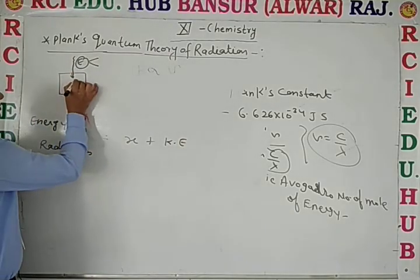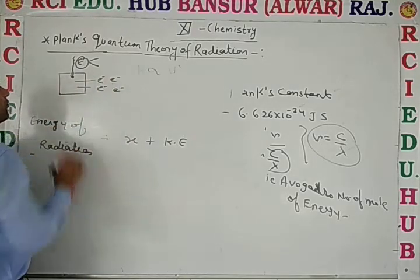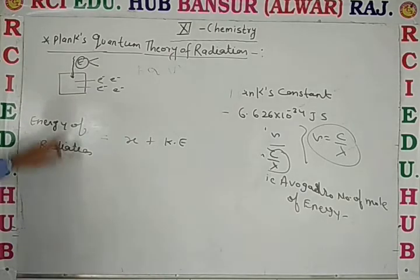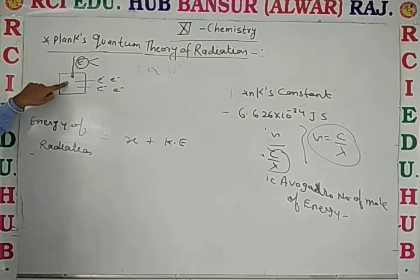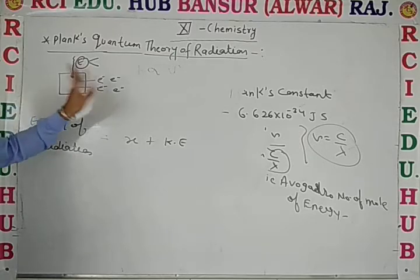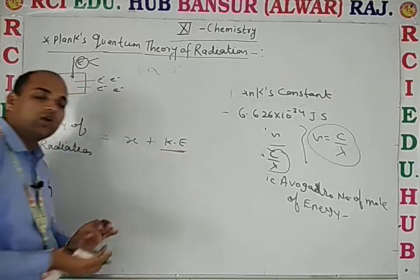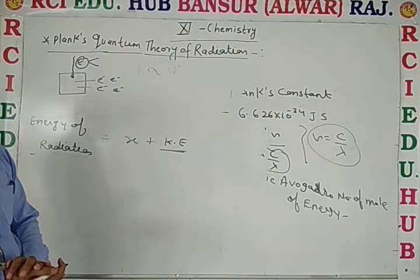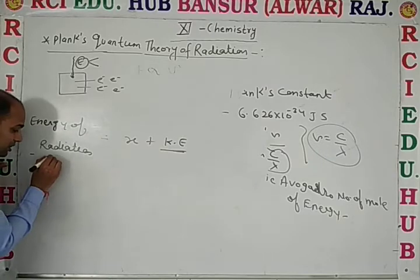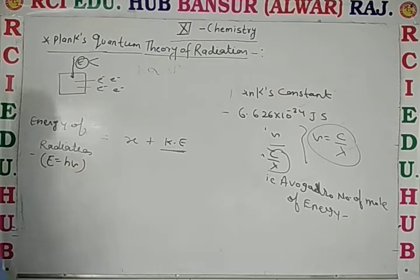This is the photoelectric effect. The energy of the photon causes ejection of an electron. The total energy of the radiation involves the electron moving from the metal surface. E is equal to the work done plus the kinetic energy of the ejected electron.